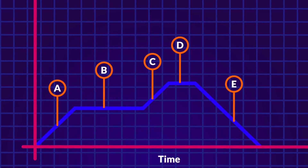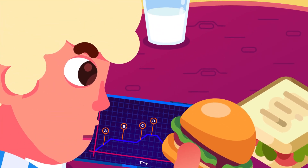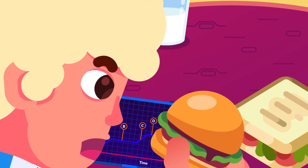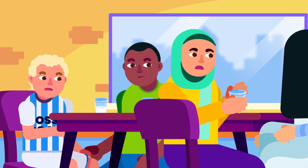Now, look at this graph. Can you tell the object speed of every section? Share your answers in the comments below!